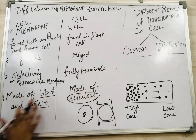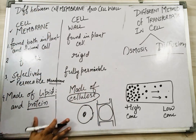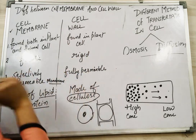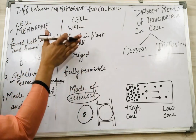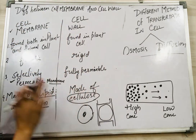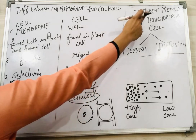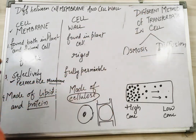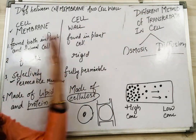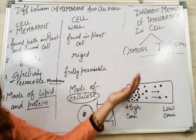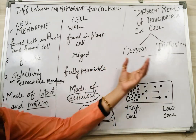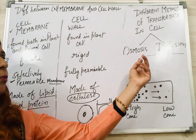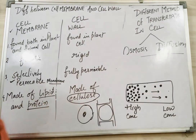You should note down these differences. Now let's talk about how the cell membrane and the cell wall follow different methods of transportation — how substances go into the cell and come out of the cell. There are two methods: osmosis and diffusion.